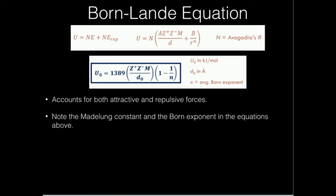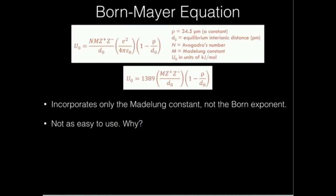We're going to put the Born-Landé equation in a form that's a little bit easier to use. We're going to combine some terms, ultimately get rid of the exponent, and get an equivalent equation where the lattice energy in kilojoules per mole equals a constant — 1,389 — times Z₊ times Z₋ times the Madelung constant, divided by the interionic distance, times the quantity (1 minus 1 over the Born exponent). Both the Madelung constant and the Born exponent appear in this equation, so we're going to have to know both of those.